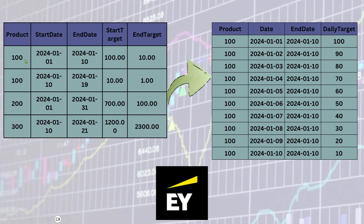For the first row, product 100 has a start date of Jan 1st, end date of Jan 10th, start target of 100, and end target of 10. The output you need to create is: for every day between Jan 1st and Jan 10th, you have to assign a target based on the start target and end target, assuming a linear line between those two points.